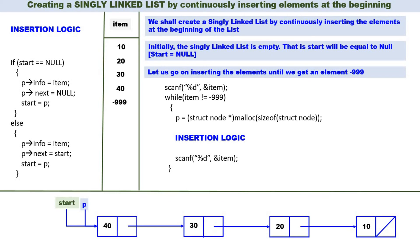Again read one more item: now item is minus 999. Go back to the while loop — item is equal to minus 999, so we come out of the while loop. When we come out, the linked list is created and start contains the address of the linked list. An important observation: in the insertion logic, if start is equal to null, the then part is executed only once — at the very beginning. In all other cases the else part is executed. In our example with four elements, the then part executed once and the else part three times. If inserting 100 elements, then part executes once and else part executes 99 times.